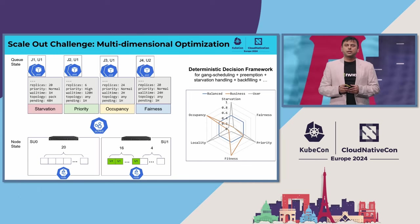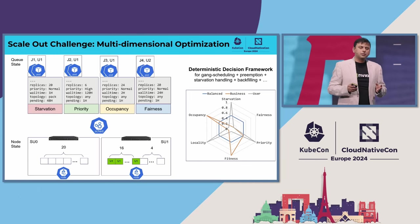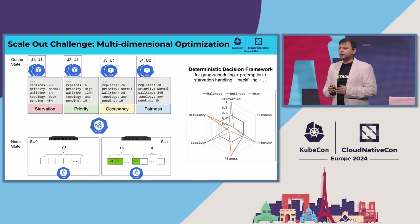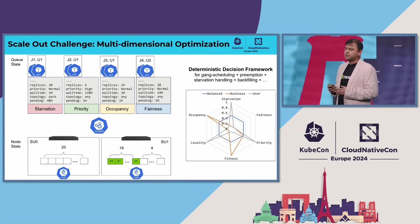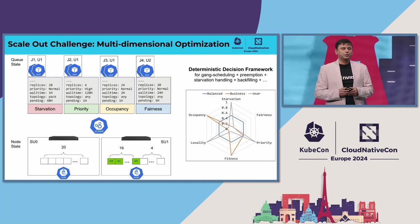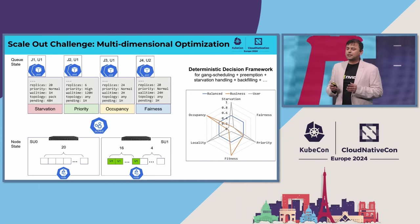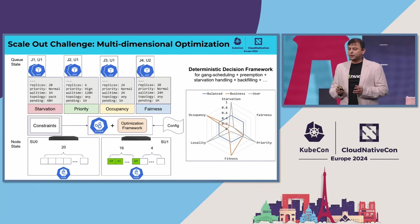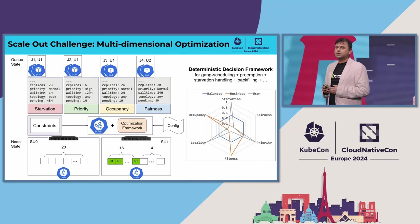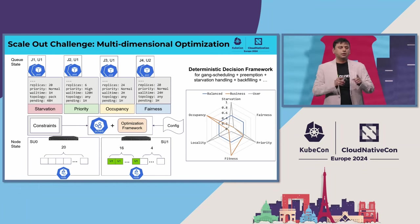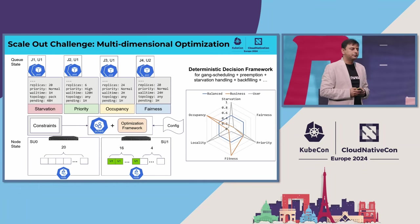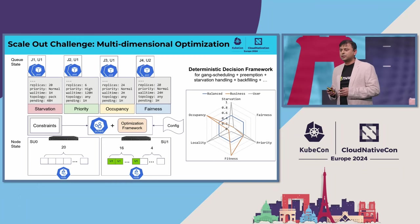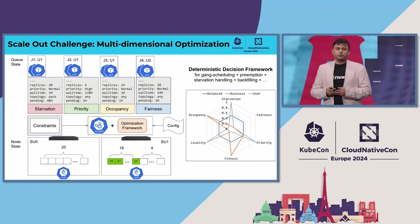So which one should the scheduler choose? For most users, the most important KPI is priority and starvation of their jobs. For the business objectives, it is occupancy of the cluster. And cluster admins always try to allocate resources fairly amongst users. This is a classic multi-dimensional optimization problem. We need to think about a configurable multi-objective optimization framework that will make deterministic decisions by considering all the global constraints in a GPU cluster — not just when scheduling, but also when finding the optimal victim set for preemption or the optimal node group when doing node reservations.